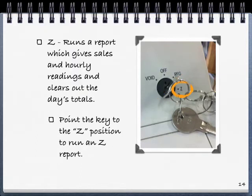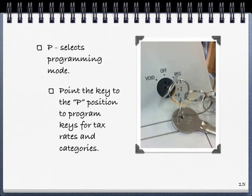Z runs a report which gives sales and hourly readings and clears out the day's totals. Point the key to the Z position to run a Z report. Lastly, P selects the programming mode. Point the key to the P position to program keys for tax rates and categories.